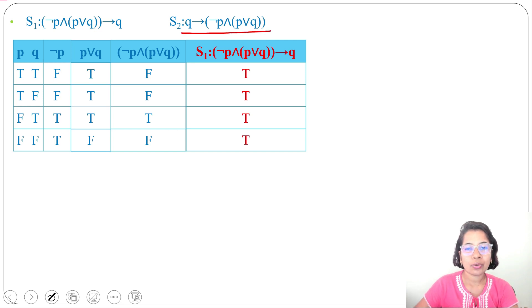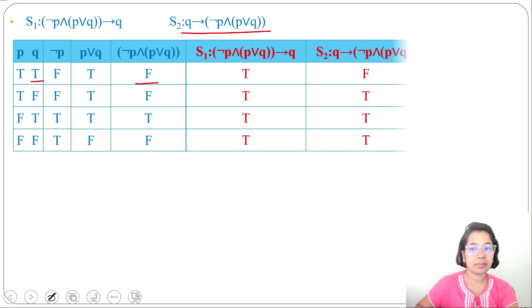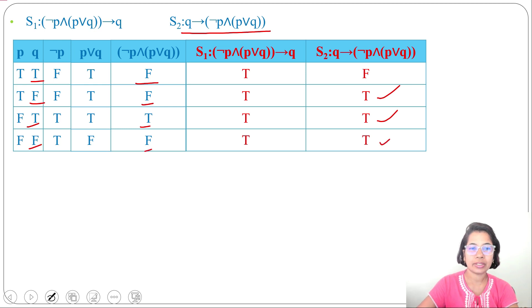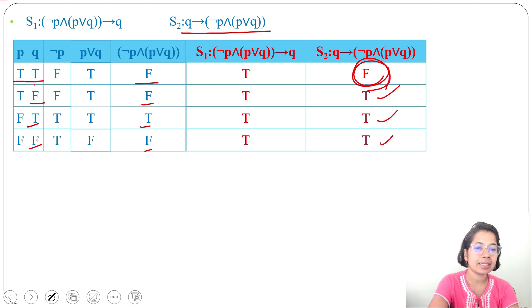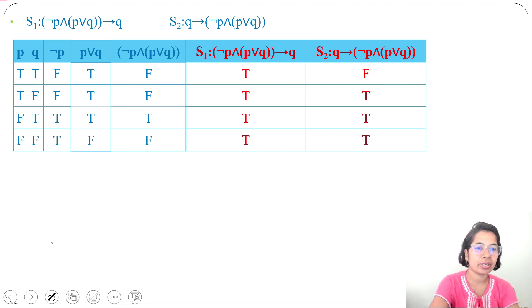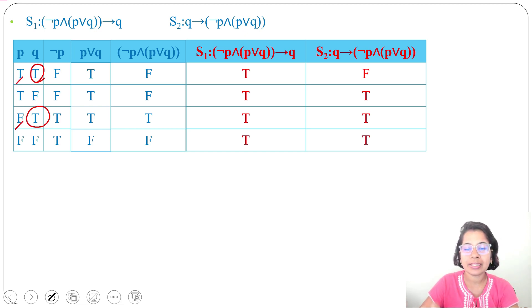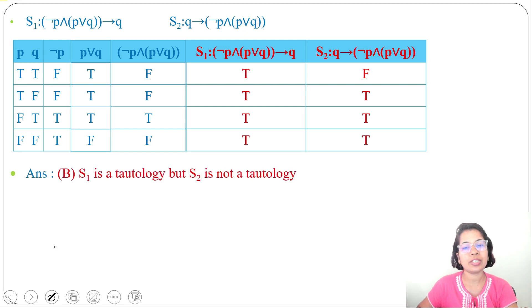Next, check S2: Q implies negation P, and P or Q. True implies false is false — so when P is true and Q is true, S2 is false. The other rows give true. So S2 is not a tautology. In the earlier explanation, I took specific truth values from the table — Q false for S1, Q true for S2 — rather than building the full table. You can do either. We found S1 is a tautology while S2 is not.